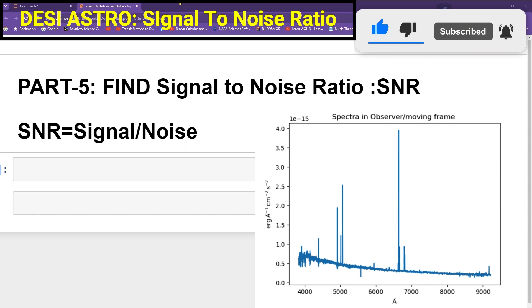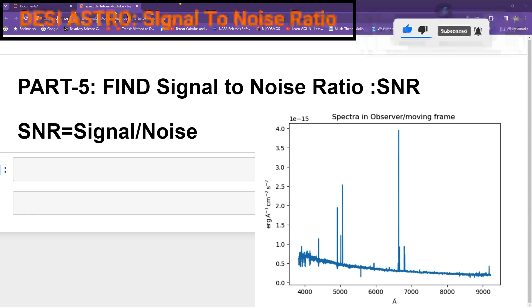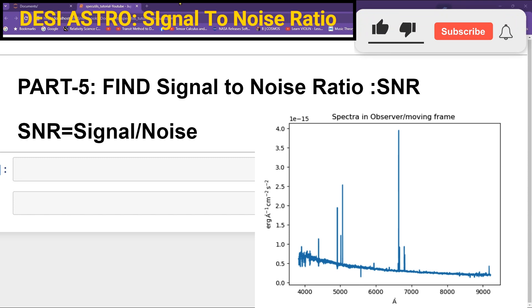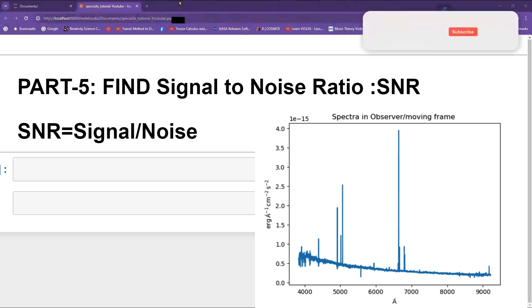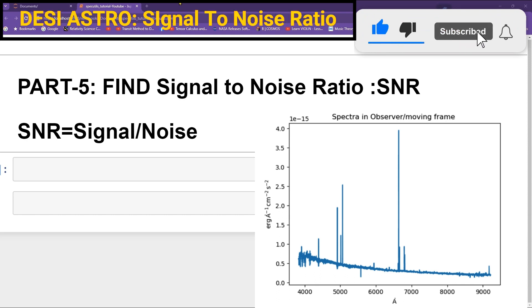First we will find SNR for the whole Spectra and then second we will find SNR in a given region of the Spectra. Here you can see that here is our sample of Spectra and we are going to find the SNR corresponding to that. So let's do it.